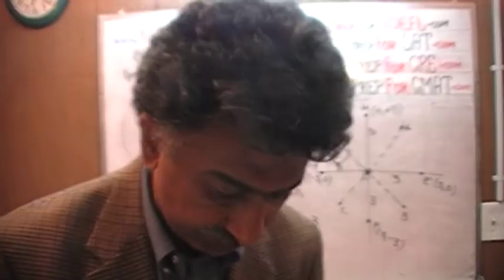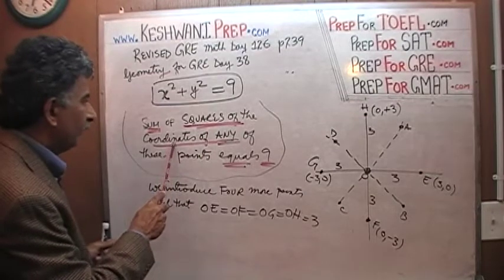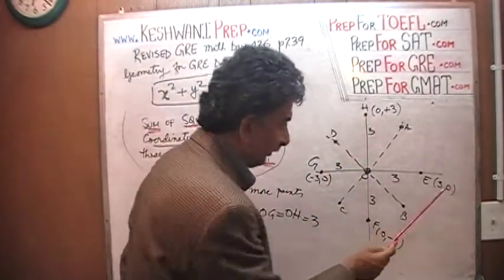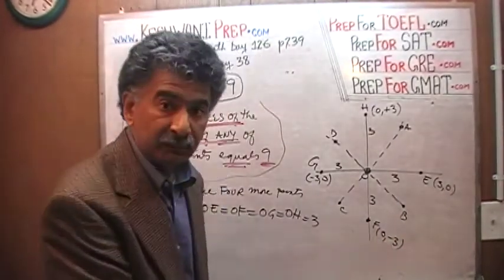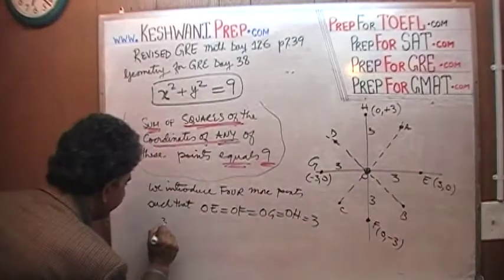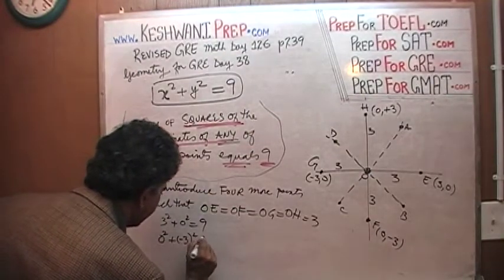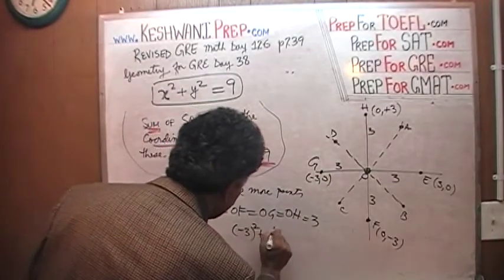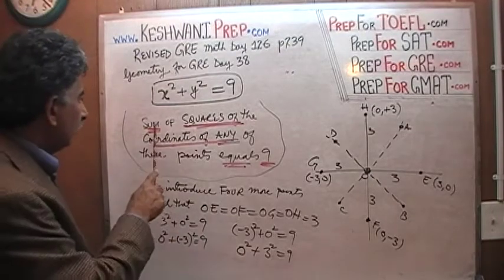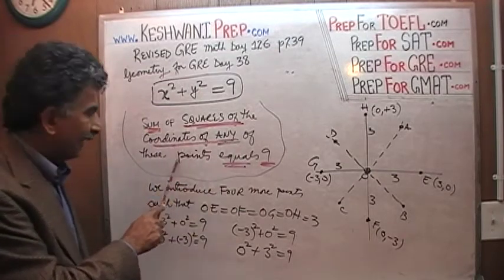What do we notice again? The exact same thing: the sum of the squares of the coordinates of any of these points equals 9. 3 squared plus 0 squared equals 9. 0 squared plus negative 3 squared equals 9. Negative 3 squared plus 0 squared equals 9. And 0 squared plus 3 squared equals 9. It holds true — the sum of the squares of the coordinates of any point still equals 9.